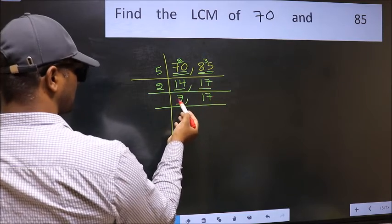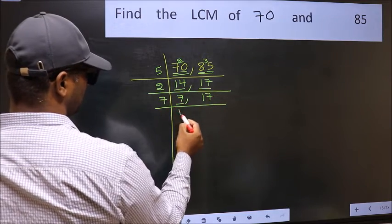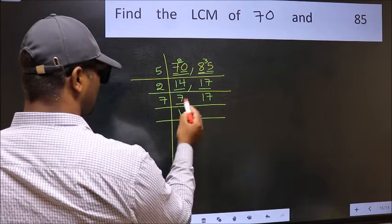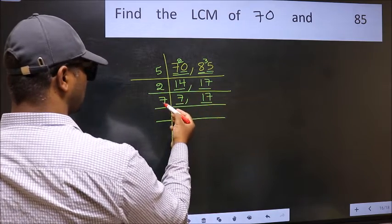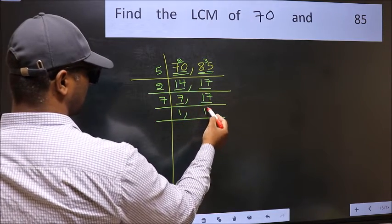Now here we have 7. 7 is a prime number, so 7 once is 7. The other number, 17, is not divisible by 7, so you write it down as it is.